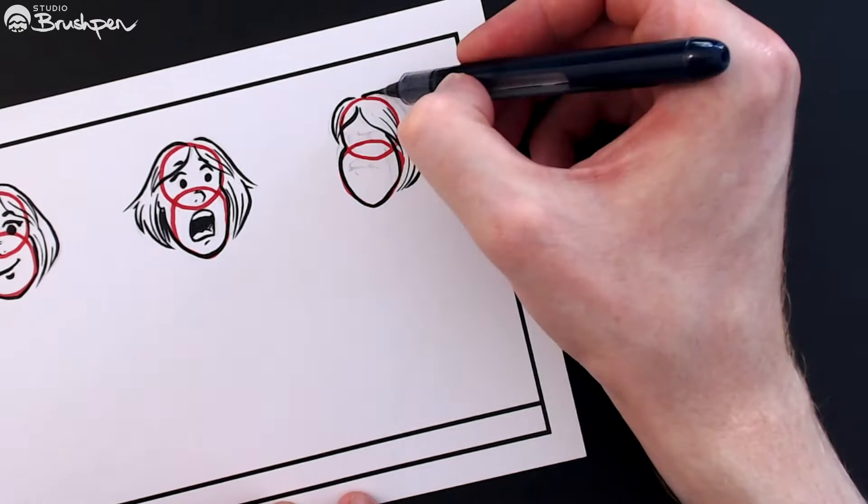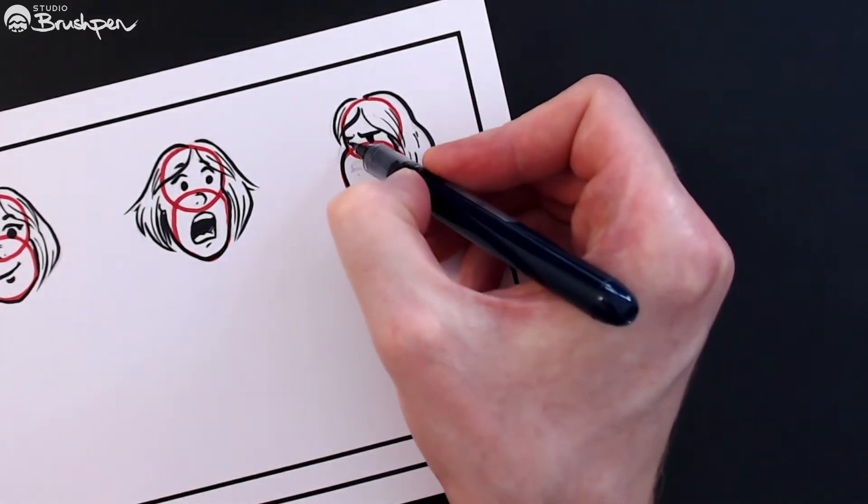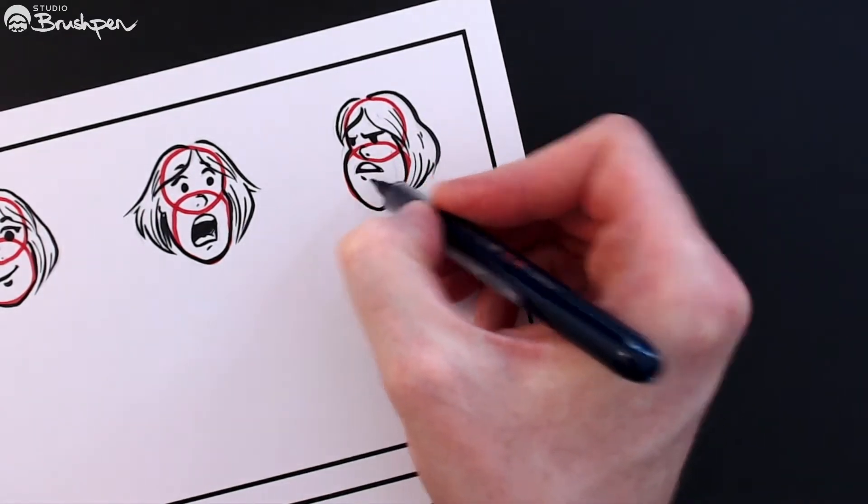Imagine that the upper circle is the skull and the lower circle is the jaw. Well, when you speak, it's really only your jaw that moves. The shape of your skull doesn't change at all.